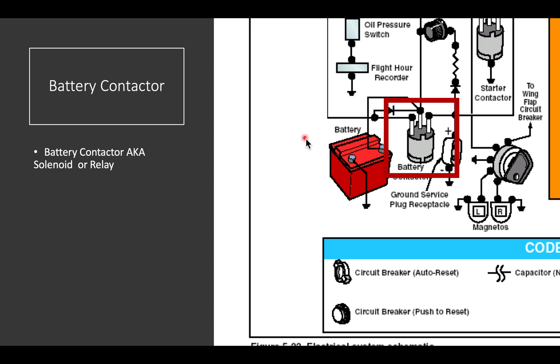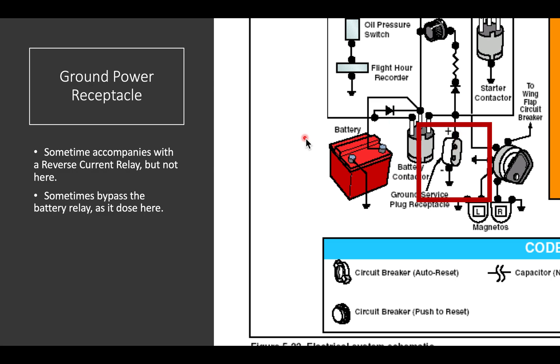The battery is connected to the system through a battery contactor. The battery contactor, also known as a solenoid or a relay, is just a very heavy-duty remote control switch. Some aircraft are also supplied with a ground surface receptacle that makes it easier to jumpstart the aircraft in the case of a weak battery.